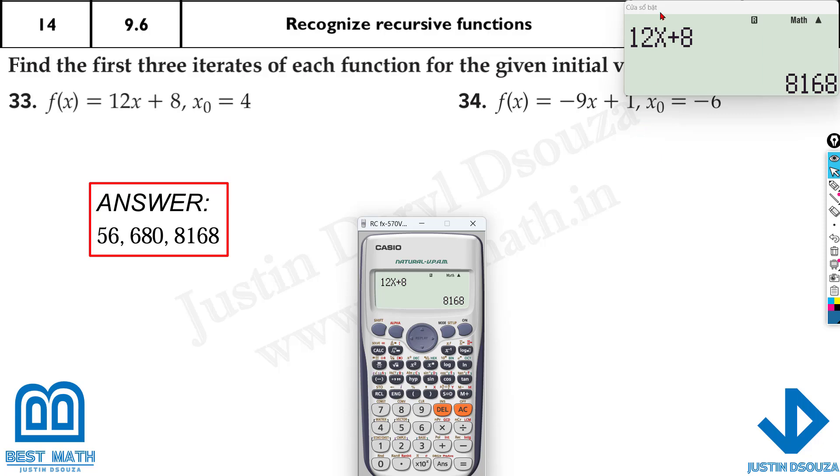So what do you do over here? Say for example here, you put this initial value, it's minus 6, isn't it? In this equation, it'll be, let me write it out, minus 9x plus 1. Calculate it at minus 6, we got 55, that's the first answer. Now calculate it at 55, that'll be the second iteration, minus 494.